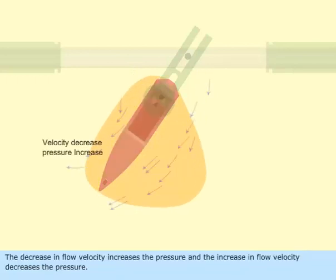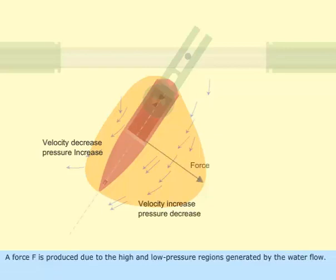The decrease in flow velocity increases the pressure, and the increase in flow velocity decreases the pressure. A force F is produced due to the high and low pressure regions generated by the water flow.